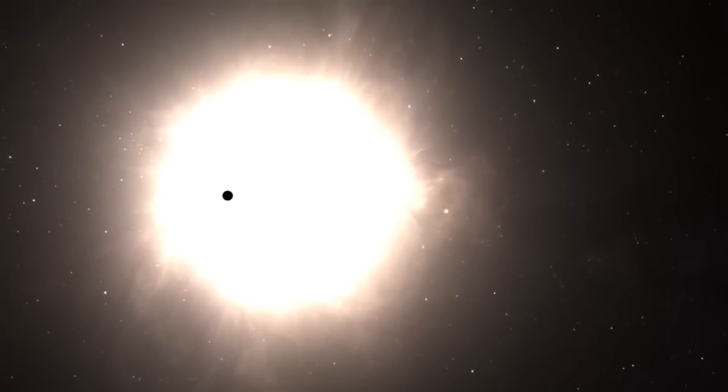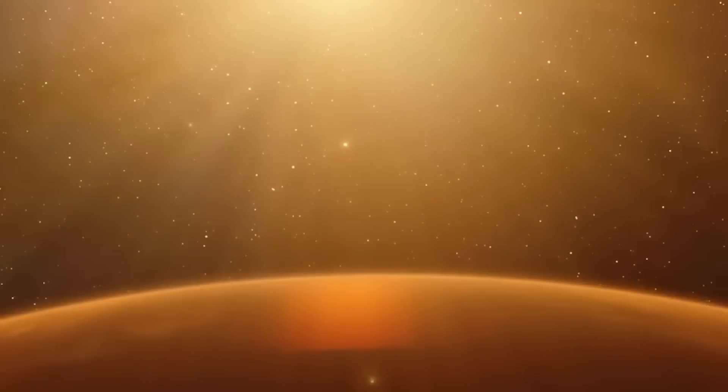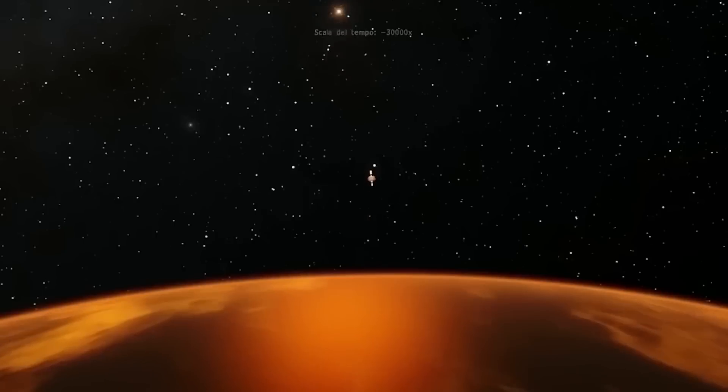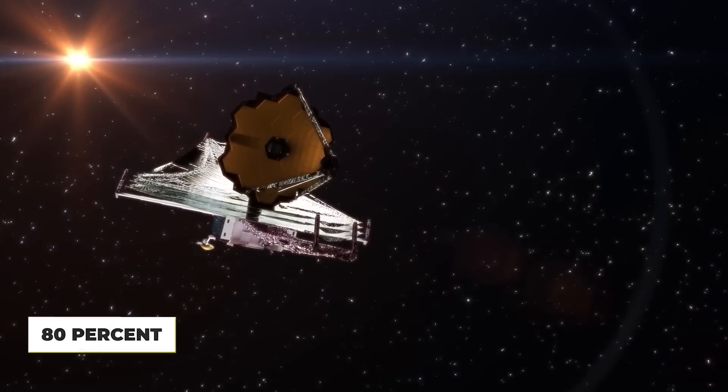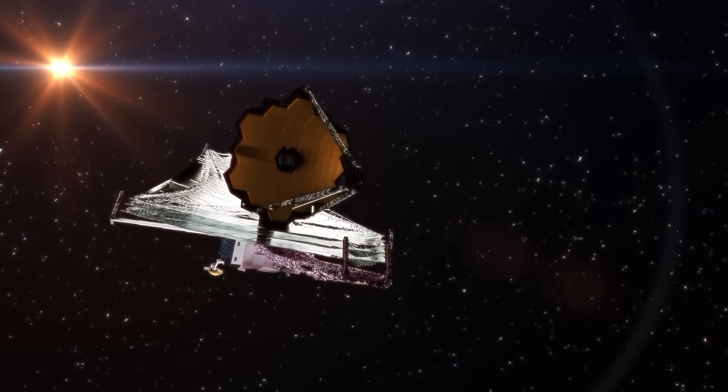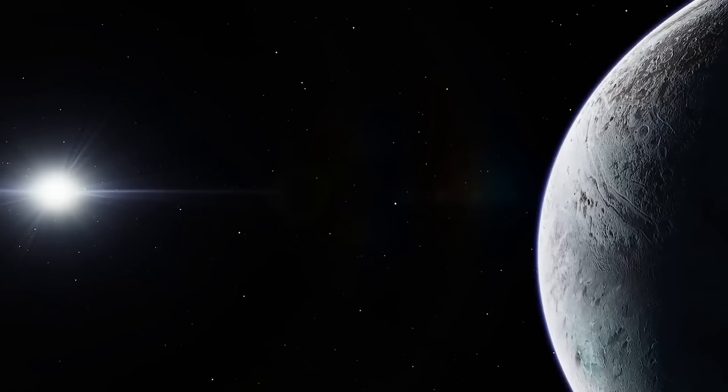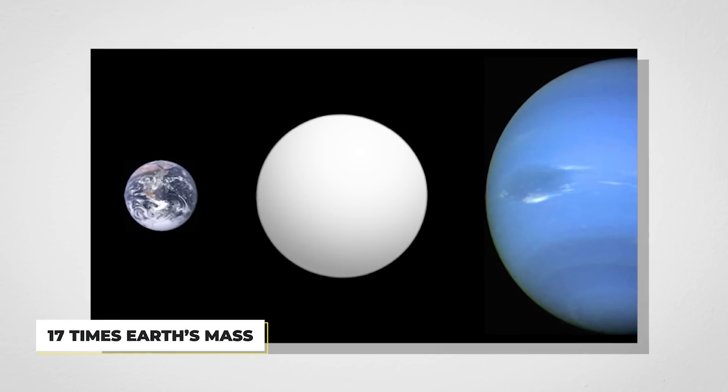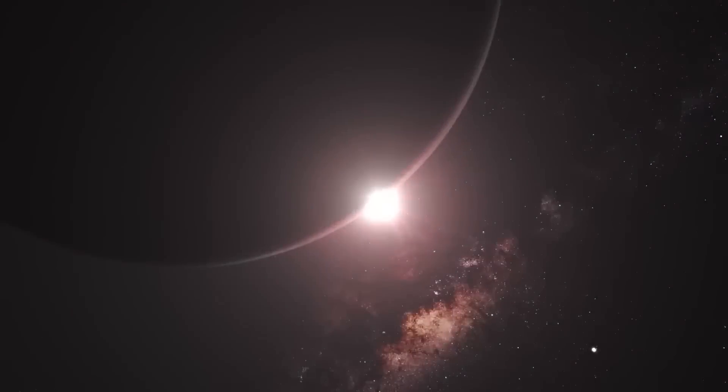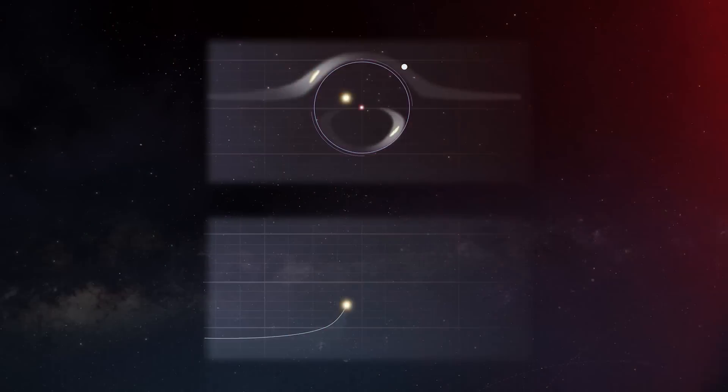Some planets push the boundary of what's scientifically possible. Take LTT 9779b, for instance. This ultra-hot Neptune is wrapped in metallic clouds so reflective it acts like a space mirror, bouncing back 80% of the light from its parent star. Then there's Kepler 10c, a planet so dense that astronomers call it a mega-Earth, tipping the scales at over 17 times Earth's mass. For all the bizarre worlds we've found, the ultimate question remains: is there life out there?